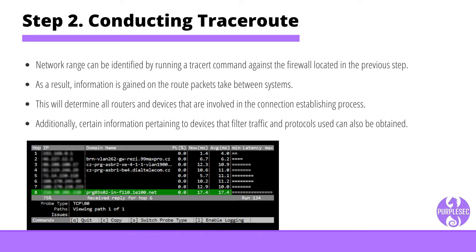Step two: conducting trace route. Network range can be identified by running a traceroute command against the firewall located in the previous step. This step also provides information regarding the route packets take between systems and determines all routers and devices involved in the connection establishing process. Additionally, certain information pertaining to devices that filter traffic and protocols used can be obtained.